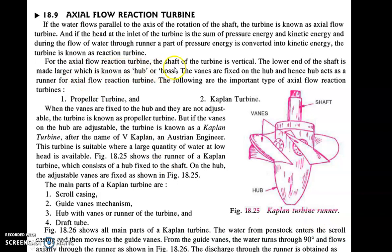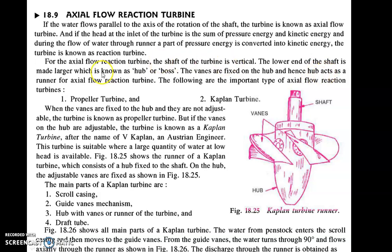In case of axial flow reaction turbine, the shaft of the turbine is vertical, and the flow takes place parallel to this shaft. There are some terms: there is one hub, also called the boss, which is mounted on the shaft. There are vanes mounted on the hub, so the vanes are fixed on the hub, and hence this hub acts as the runner for an axial flow reaction turbine.